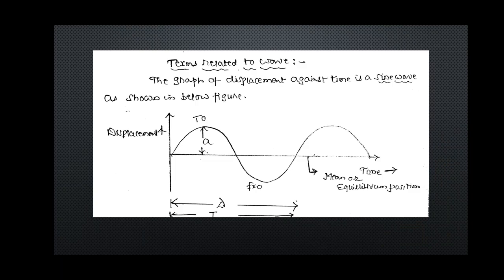The wave diagram is called a sine curve in mathematics and trigonometry, because the trigonometric function sin θ takes values 0, 1, 0, −1, 0, 1, −1, 0. If I plot a graph of displacement versus time of a particle executing SHM, the resulting graph is a sine curve. The y-coordinate is displacement and x-coordinate is time; the resulting graph is a sine curve called the sine curve in electronics and trigonometry.